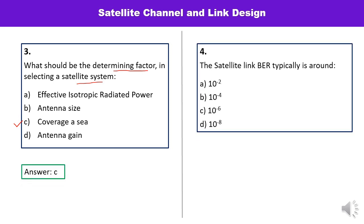Question number 4: the satellite link BER is typically around what value? BER is bit error rate, and for a satellite link it is around 10 raised to the power minus 6. You have to remember this value — it is the correct answer.